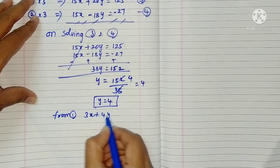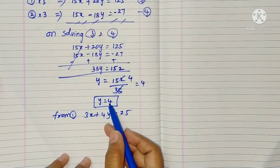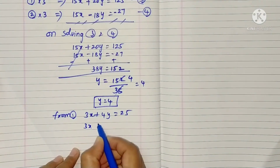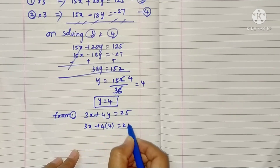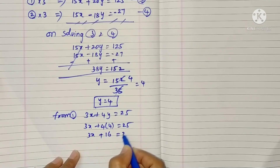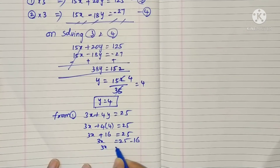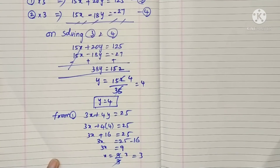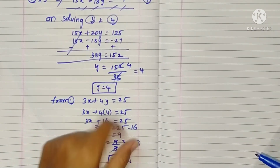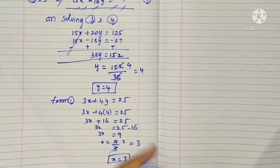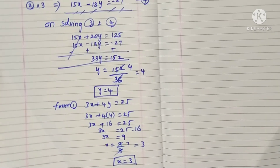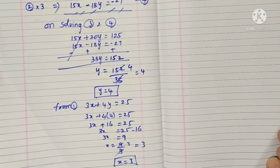Now substituting y equals 4 in equation one: 3x plus 4 into 4 equals 25. Four fours are 16, so 3x equals 25 minus 16, which gives 3x equals 9. Therefore x equals 9 divided by 3, so x equals 3. Finally x equals 3 and y equals 4 are the solutions. These are the solutions for page number 89. Please like this video, share with your friends, and subscribe to my channel. Thank you for watching.